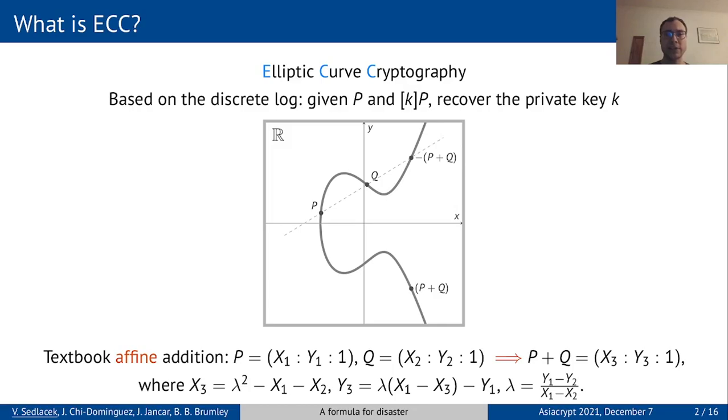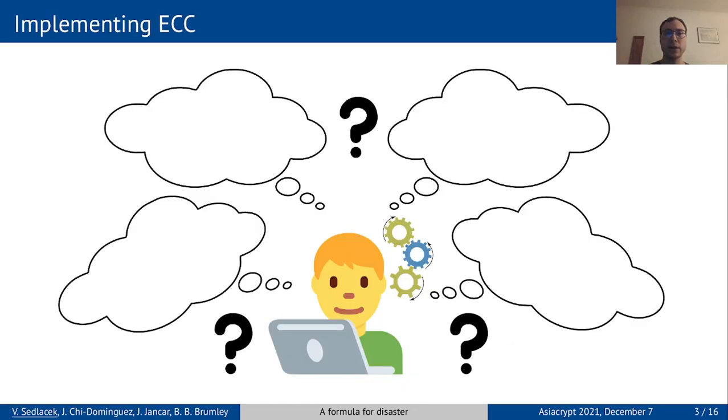This creates a lot of complexity. Let us imagine that you are a developer who wants to implement ECC. You have many choices to make. Depending on your curve, you might need to pick a curve model: short Weierstrass, Montgomery, Edwards, or twisted Edwards.